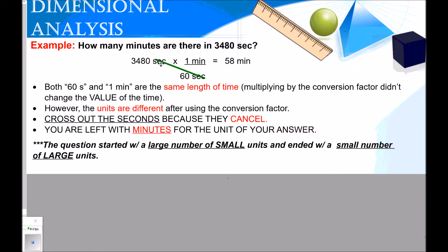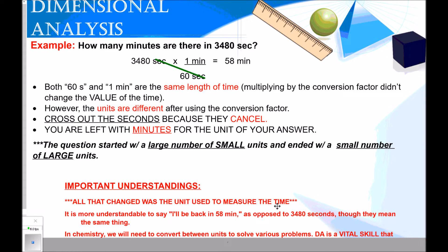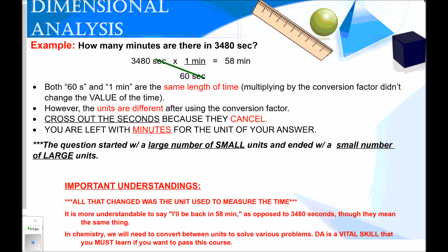To get the number answer, multiply across the top and divide by the bottom. To get the unit answer, you just cancel out. The question started with a large number of small units and ended with a small number of large units. All that changed was the unit used to measure the time. It's more understandable to say 'I'll be back in 58 minutes' than '3,480 seconds,' though they mean the same thing. In chemistry, we will need to convert between units to solve various problems. Dimensional analysis is a vital skill you must learn if you want to pass this course.